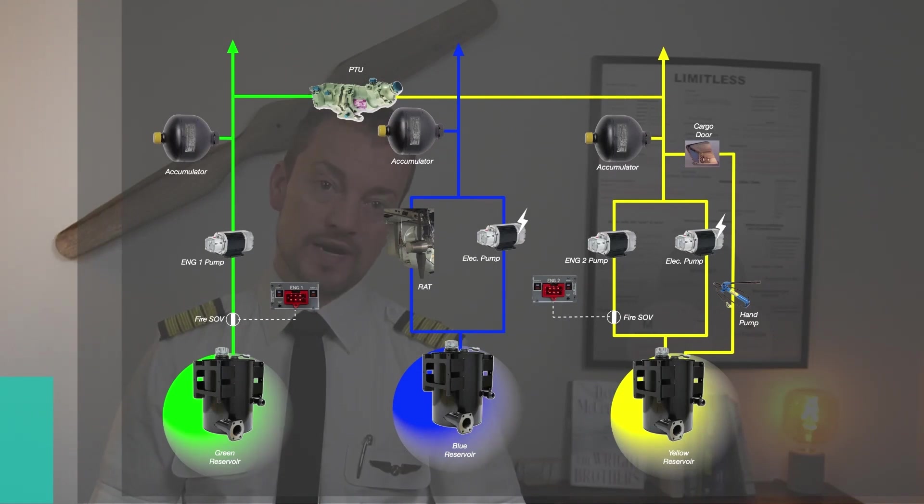There is a simple way to pressurize the systems prior to starting the engine. Before engine start, you will operate the yellow electrical hydraulic pump here. This will pressurize the yellow system and the PTU will pressurize the green system.